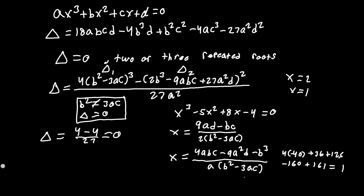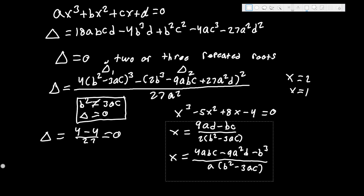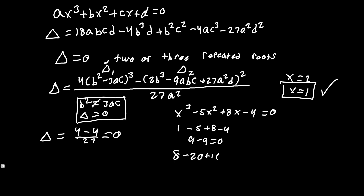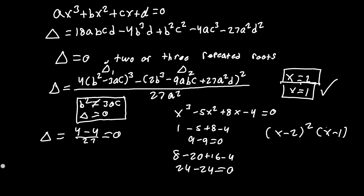Let's verify: for x=1: 1 - 5 + 8 - 4 = 0 ✓. For x=2: 8 - 20 + 16 - 4 = 0 ✓. So x=2 is the repeated root and x=1 is the simple root, giving us the factored form (x-2)²(x-1).